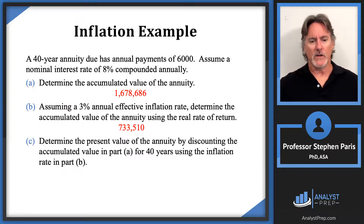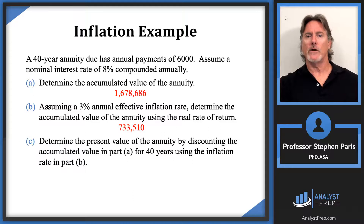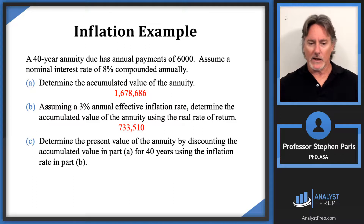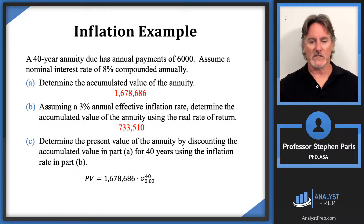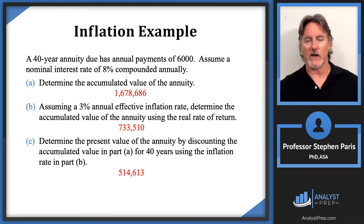For Part C, the question is to determine the present value of the annuity by discounting the accumulated value from Part A for 40 years using the inflation rate from Part B. This is a straightforward discounting question: I take the 1.678 million from Part A and multiply it by v to the 40th, where v is the annual discount factor using the three percent inflation rate. When I do that I get five hundred fourteen thousand six hundred thirteen.